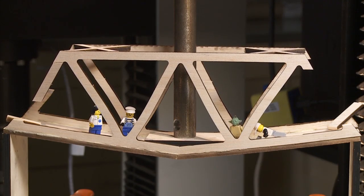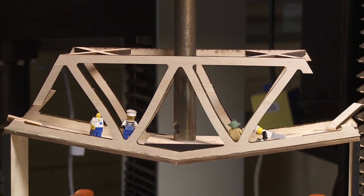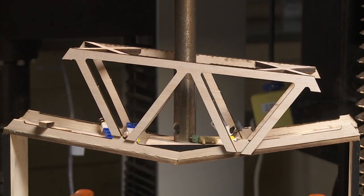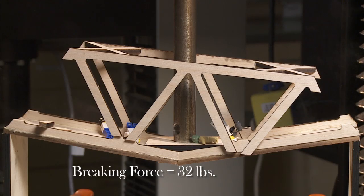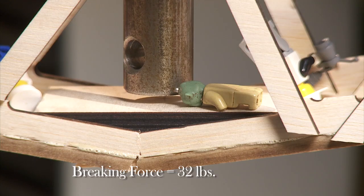That's because the top pieces are aligned along the grain of the wood, and wood is stronger in that direction. Adding the truss allowed the same deck length to hold 32 pounds, which is 25% stronger than the beam bridge of the same length.